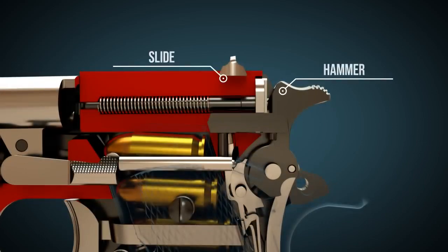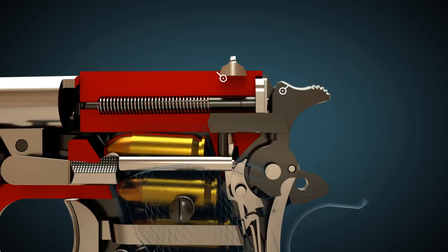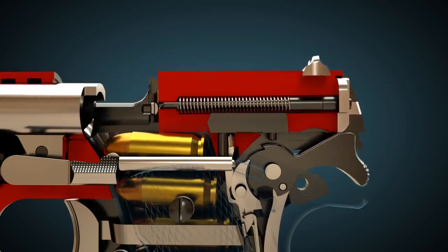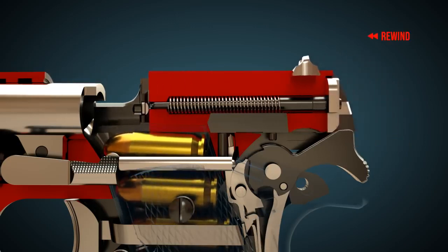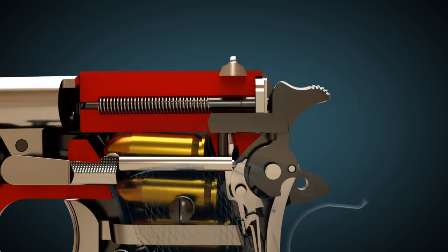When the slide is moved backwards by hand, the hammer is cocked. The sear engages the hammer. Let's wind back and look again at the sear and how it engages the hammer.